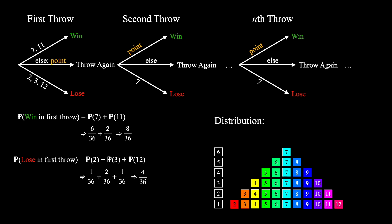Finally, we can get the probability that we throw a point in our first throw. Since these three situations are mutually exclusive, we can compute this by doing 1 minus the probability of winning plus the probability of losing. This gives us 24 by 36.